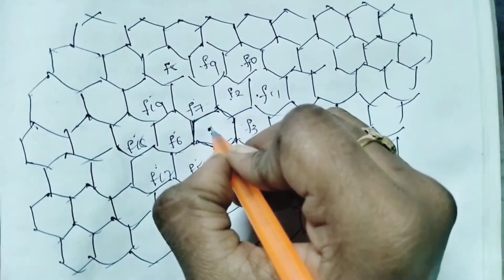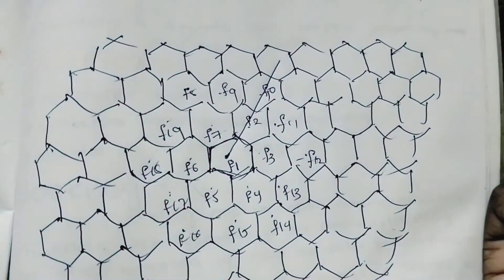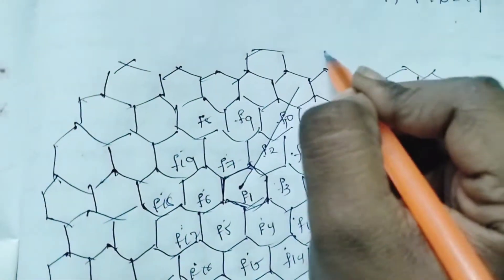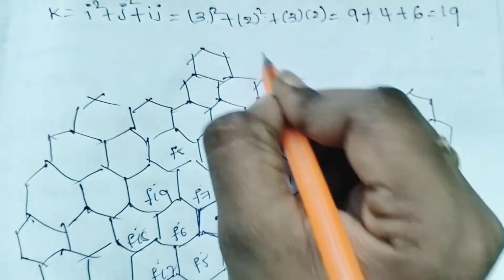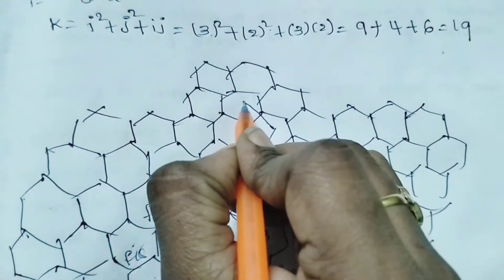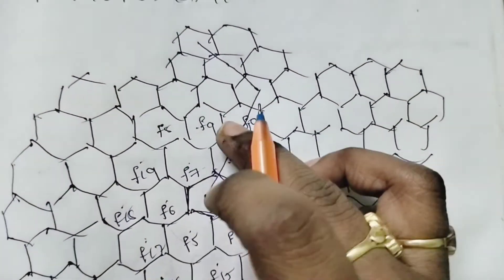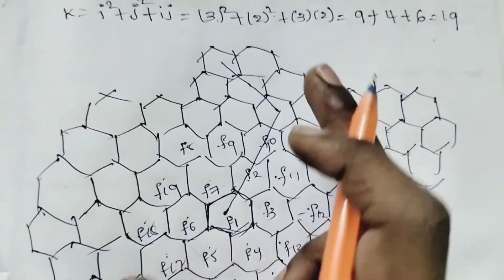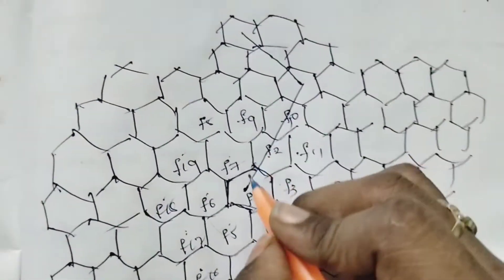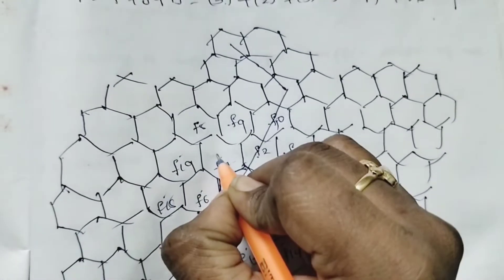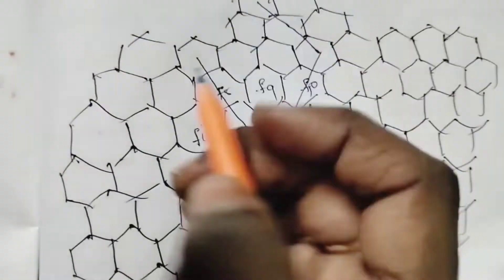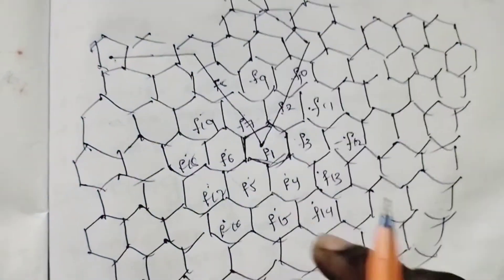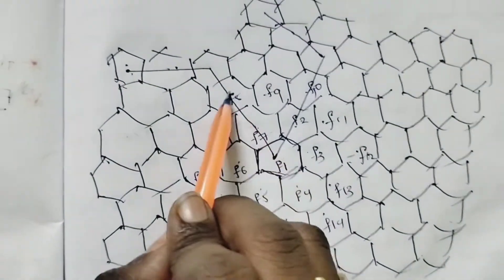Starting from F2: for i value 3, count 1, 2, 3 — take 3 cells. For j value 2, count 1, 2 — only 2 cells. Starting from F7: for i equals 3, count 1, 2, 3 cells. For j equals 2, count 1, 2 cells. Starting from F6: count 1, 2, 3 for i, and 1, 2 for j.